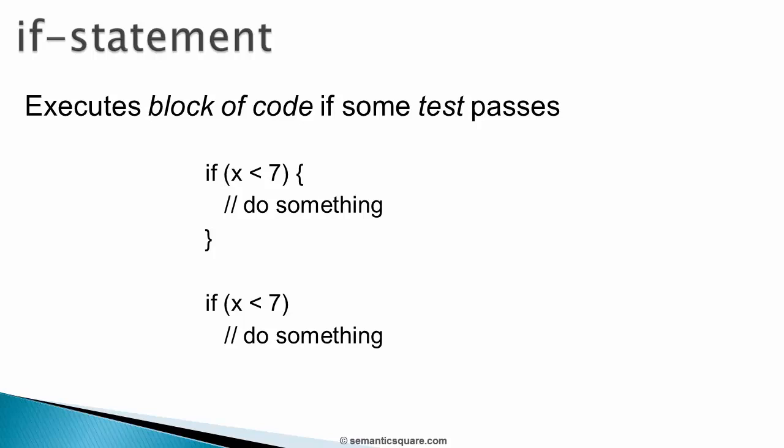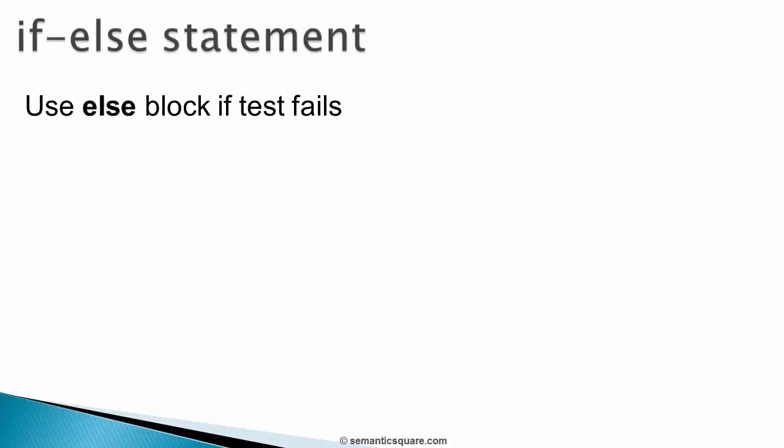Once the body is executed, the control continues with the next statement following the if statement. This happens even if the if condition fails. But if the if condition fails and you want to execute an alternative block of code before executing the statements that follow the if statement, then you can use an else block.